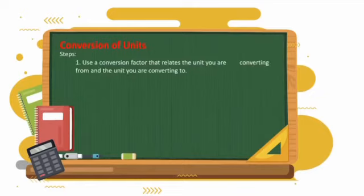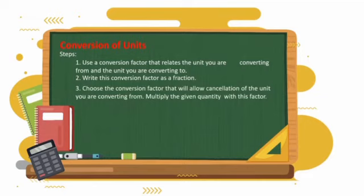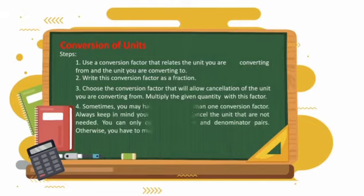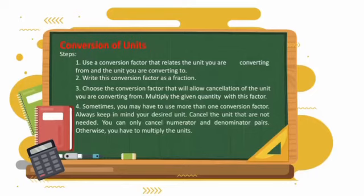Here are the steps: 1. Use a conversion factor that relates the unit you are converting from and the unit you are converting to. 2. Write this conversion factor as a fraction. 3. Choose the conversion factor that will allow cancellation of the unit you are converting from. Multiply the given quantity with this factor. 4. Sometimes you may have to use more than one conversion factor. Always keep in mind your desired unit. Cancel the units that are not needed. You can only cancel numerator and denominator pairs. Otherwise, you have to multiply the units.